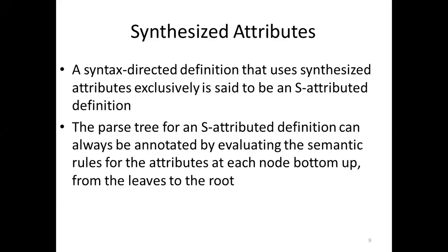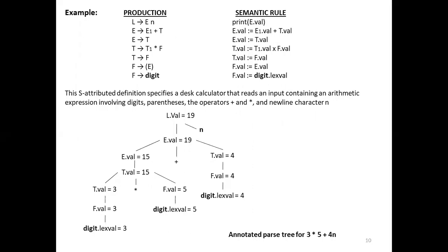When we use an Inherited Attribute, its value comes from the top — a parent — or from a sibling. A sibling means if there are two children of the same parent, they are siblings to each other. We will see why siblings are needed. These are the productions and semantic rules we have seen defined for our example.